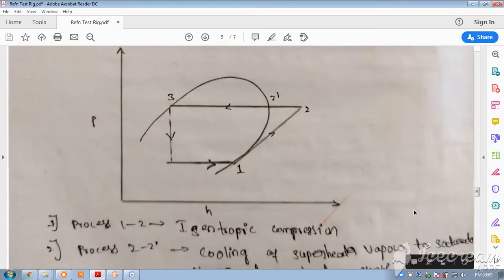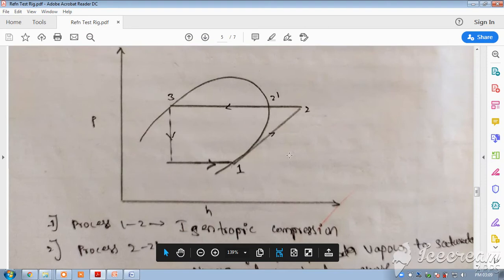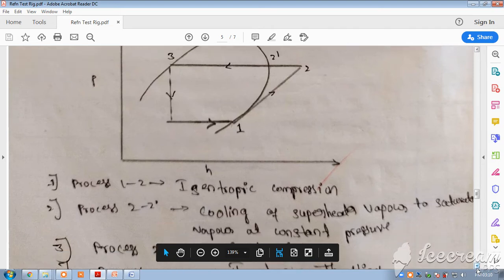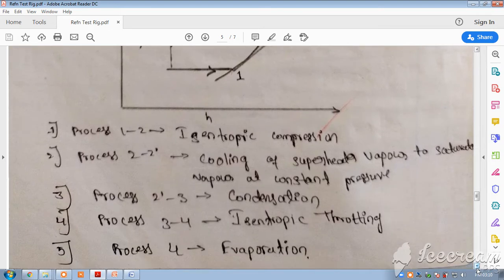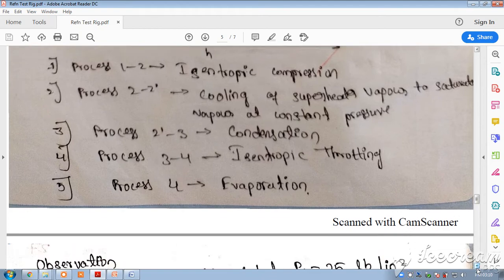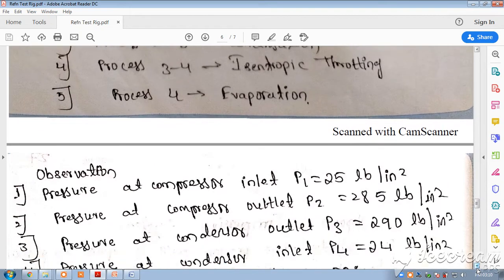Now, if you just look at this pressure-enthalpy diagram, we can see the cycle process. 1 to 2 is the isentropic compression, 2 to 3 is the condensation, 3 to 4 is the isentropic throttling, and 4 to 1 is the evaporation.